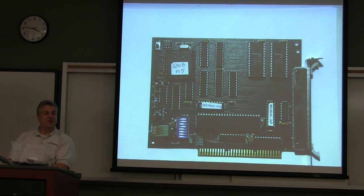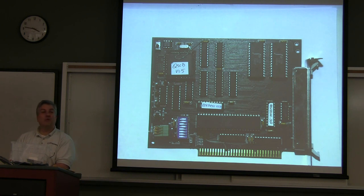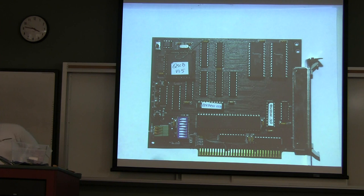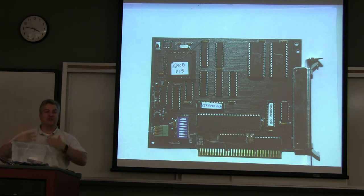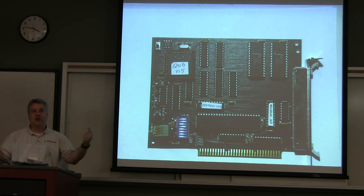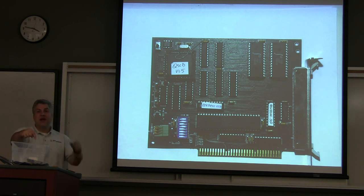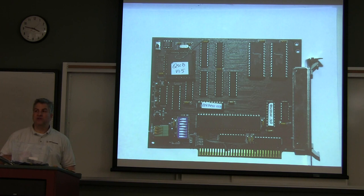Dual port memory is a RAM device where you can access all the memory on the chip from two different directions — from two separate ports. You can hook it up to two devices, and one device can put memory into it while the other device can take it out from two different sets of pins, operating at the exact same time.